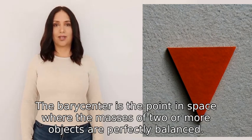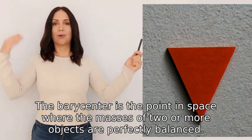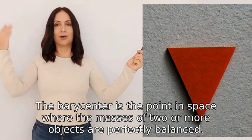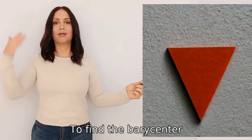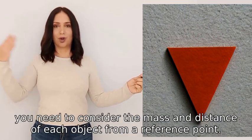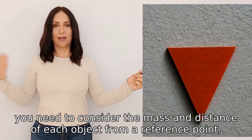The barycenter is the point in space where the masses of two or more objects are perfectly balanced. It is like the center of gravity for these objects. To find the barycenter, you need to consider the mass and distance of each object from a reference point.